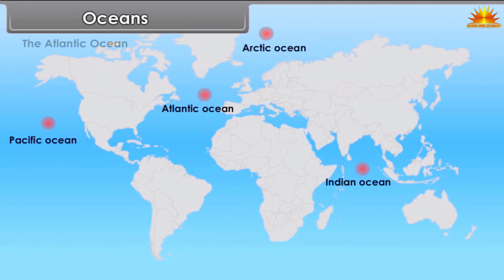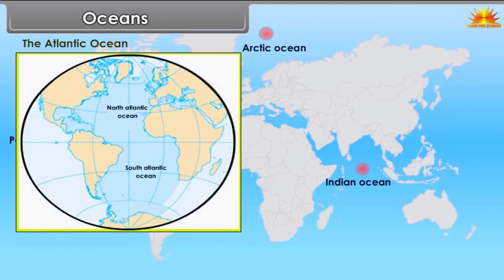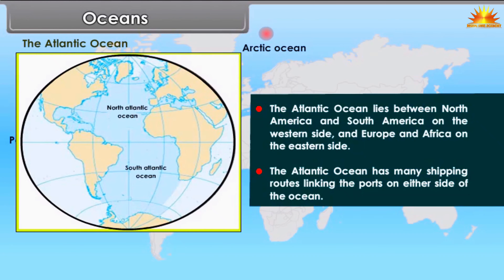The Atlantic Ocean lies between North America and South America on the western side, and Europe and Africa on the eastern side. The Atlantic Ocean has many shipping routes linking the ports on either side of the ocean.